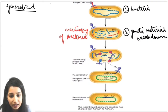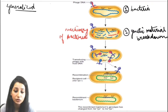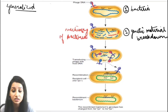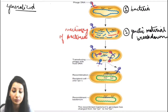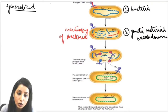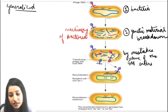Now the phage capsules will take their genetic material back, because the genetic material is present in the bacteria — this is shown in red color. So the phage will take the genetic material back. During this process, by mistake, some of the bacterium's genetic material can enter into the phage body.